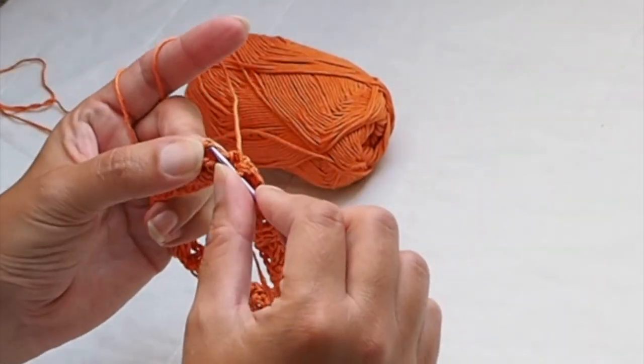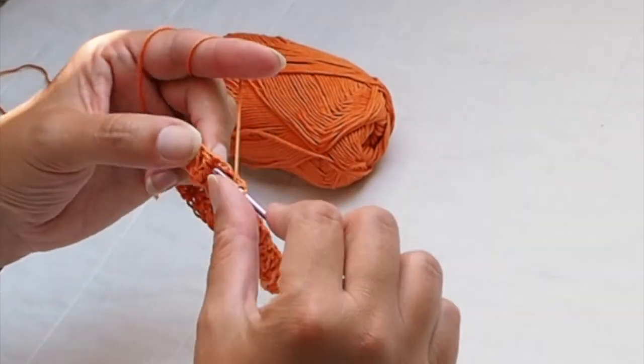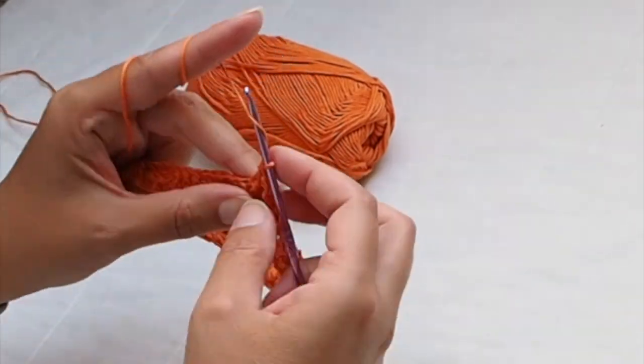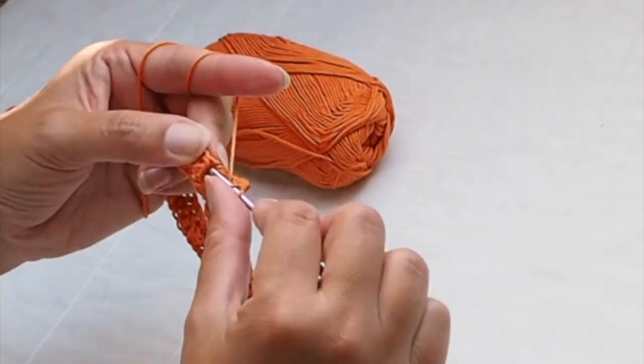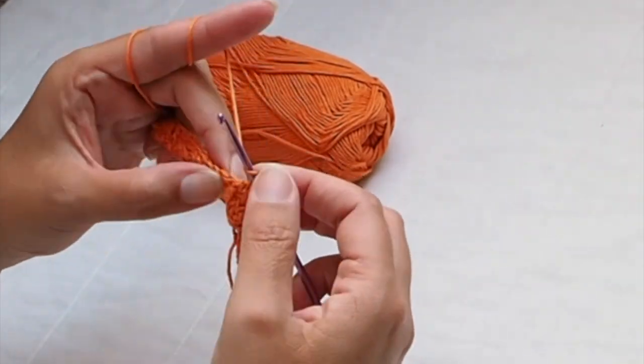In front post double crochet I place again front post double crochet, and into back post double crochet I crochet back post double crochet. So the pattern is absolutely the same in each round.